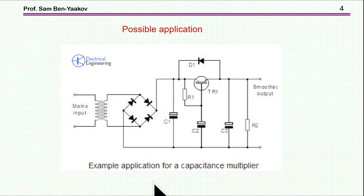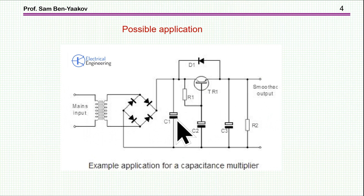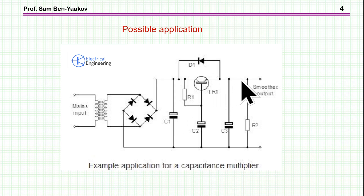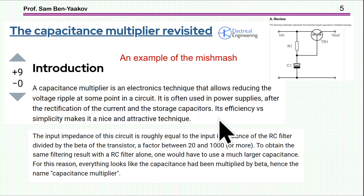Here is an example of a possible application: a mains rectifier with initial filtering by C sub 1, then the BJT filter, and the output. The diode is just for protection against reverse voltage. This will smooth out the ripple and give a fairly nice DC output.